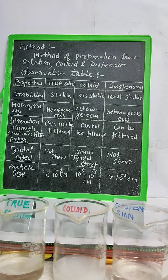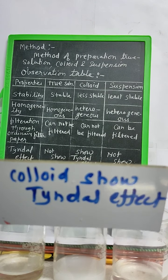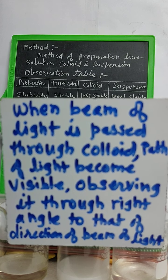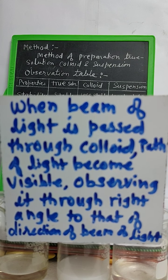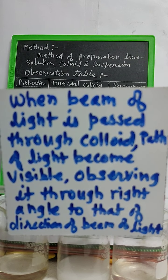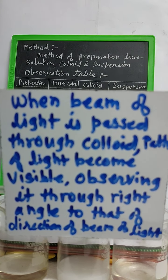Colloids show the Tyndall effect. When a beam of light is passed through a colloid, the path of light becomes visible when observed at a right angle to the direction of light. This is called the Tyndall effect.